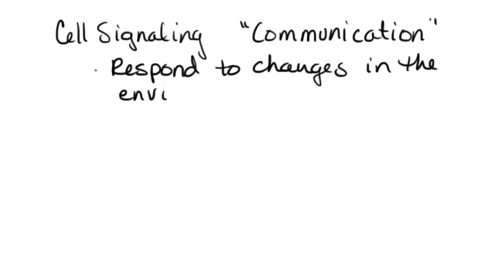When we refer to changes in the environment, this could include all different types of things. This could be changes in just the physical environment — by that we mean temperature or pressure, changes in the amount of light, things of that nature. It could be chemical changes, a change in pH, or a change in other molecules that are present, or it could just be responding to a change in a neighboring cell.